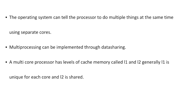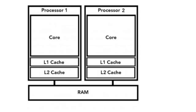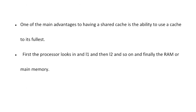Some processors have cache up to L4. These levels of cache memory ensure that the processor doesn't have to look very far to find its next process, saving a lot of time. L2 cache is larger in memory but slower than L1 cache. In a multi-core processor, L1 cache is unique to each core and L2 is shared.